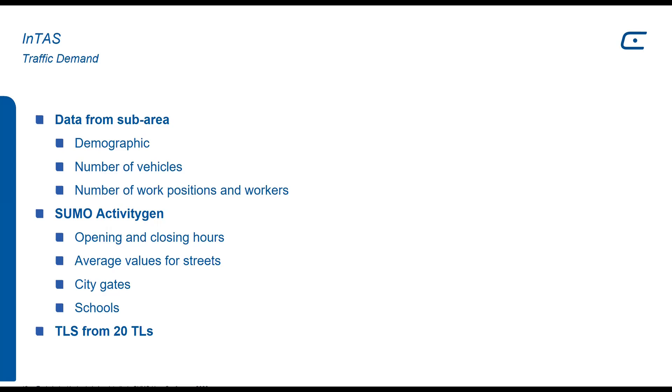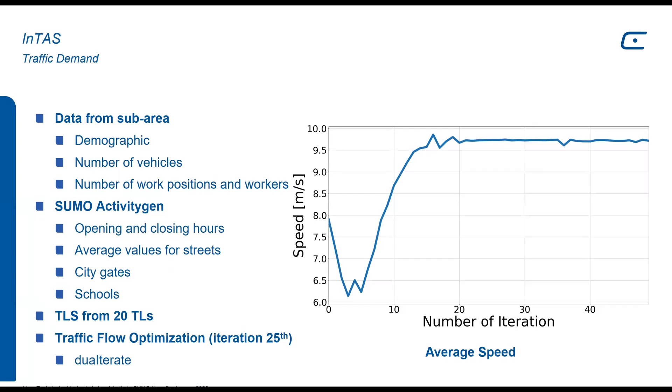After that, we created a first route file using dual router, and it has been observed that the traffic didn't have realistic behavior because all the vehicles were taking the same path to reach their destination. To solve this issue, we worked in a direction to work with the dynamic user equilibrium. For that, we went through dual iterate.